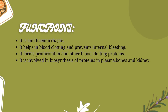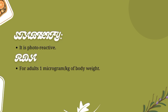What are the functions of Vitamin K? It is anti-hemorrhagic — if you have a hemorrhage issue, you definitely have Vitamin K deficiency. It helps in blood clotting and prevents internal bleeding. It forms prothrombin and other blood clotting proteins. It is involved in the biosynthesis of proteins in plasma, bones, and kidney. It is photoreactive, and the RDA for adults is 1 microgram per kilogram of body weight.